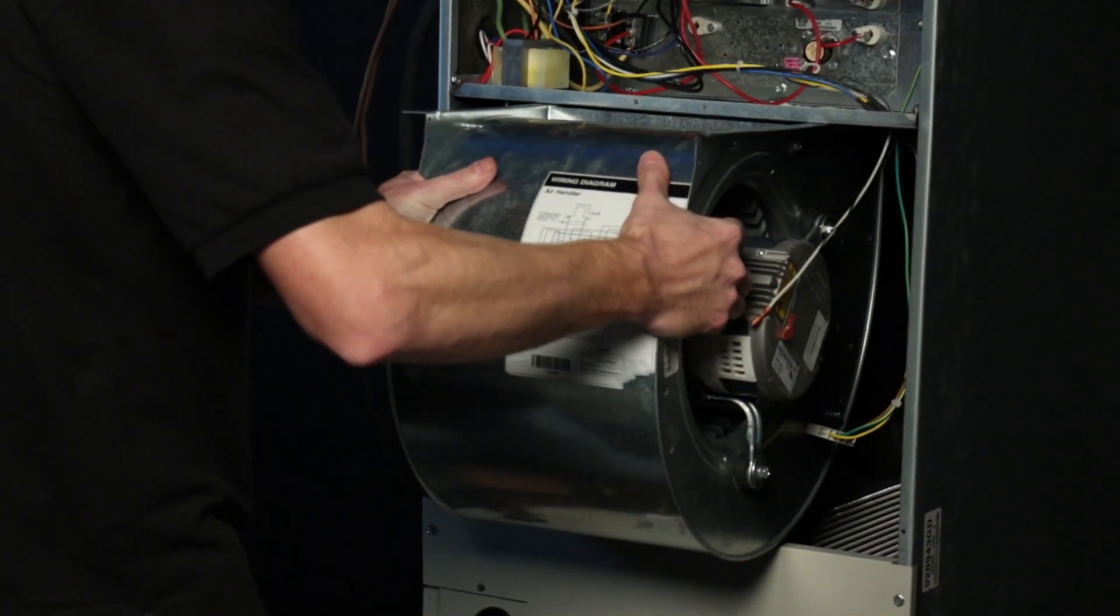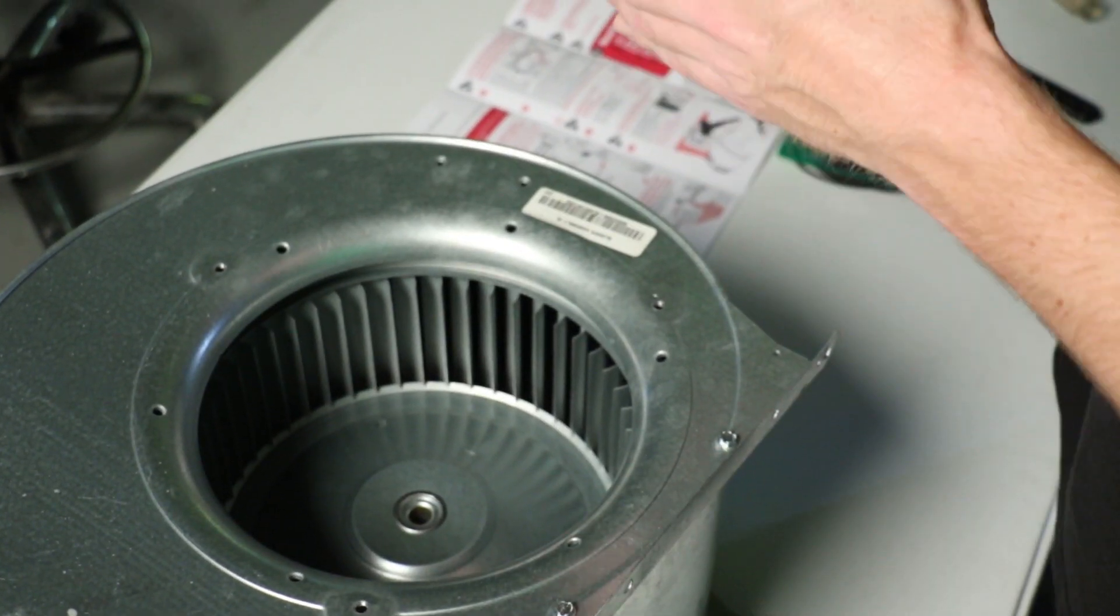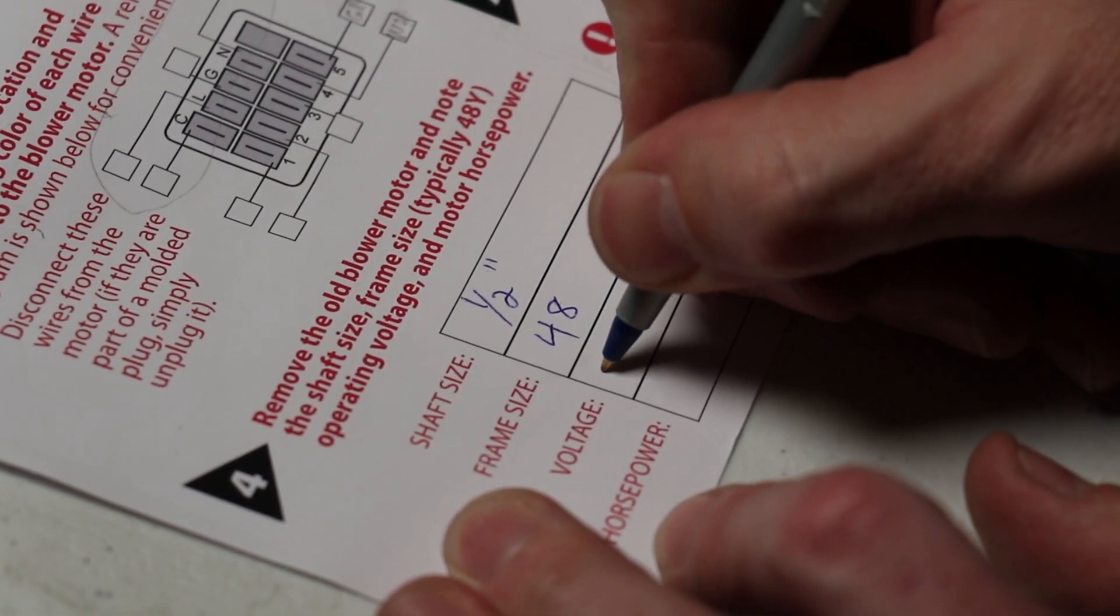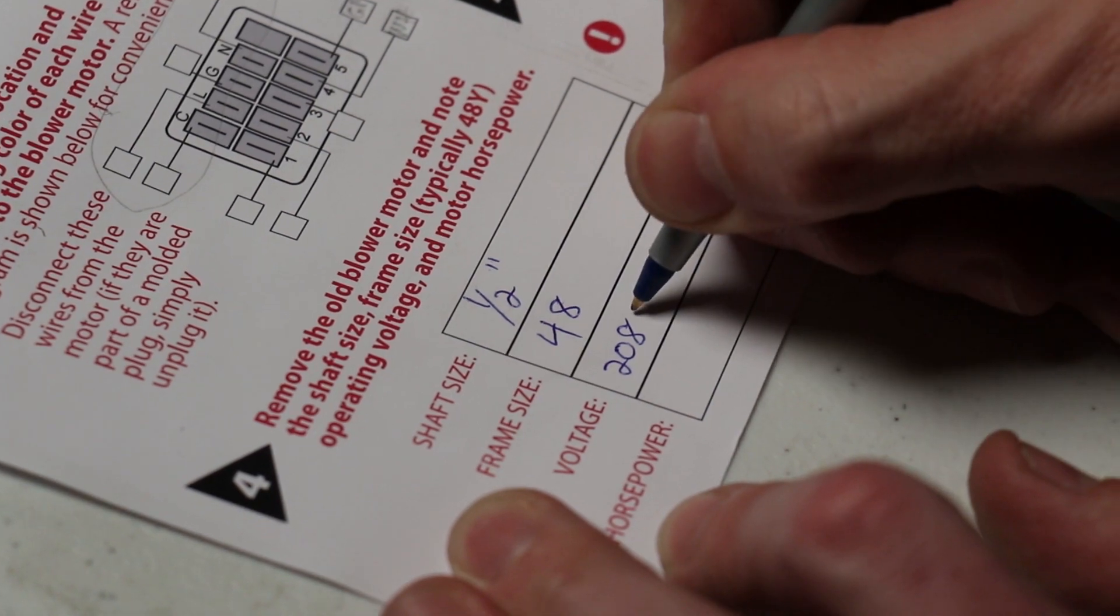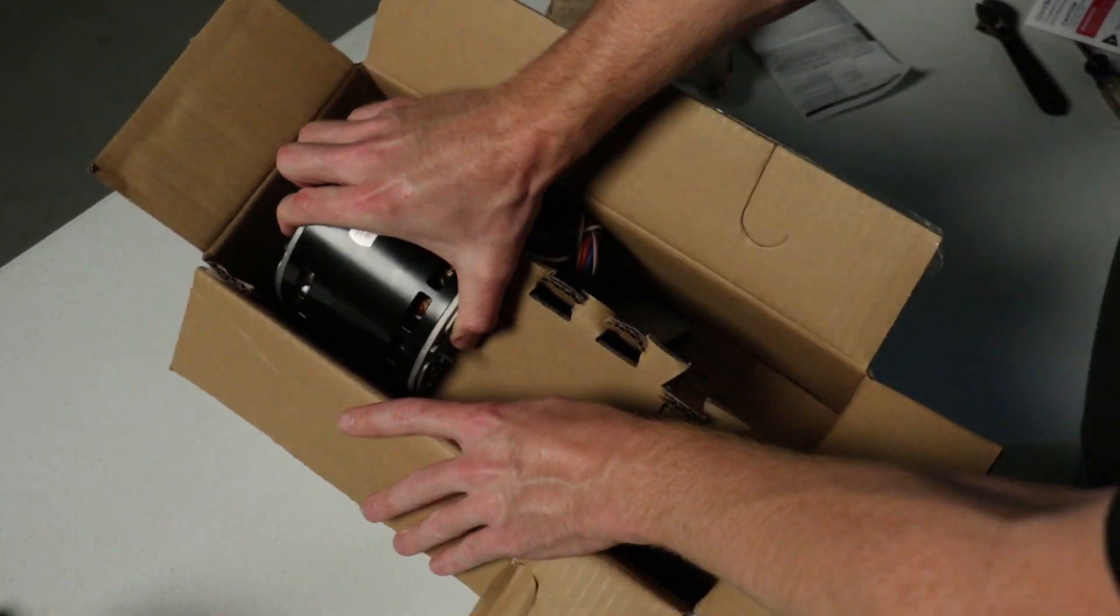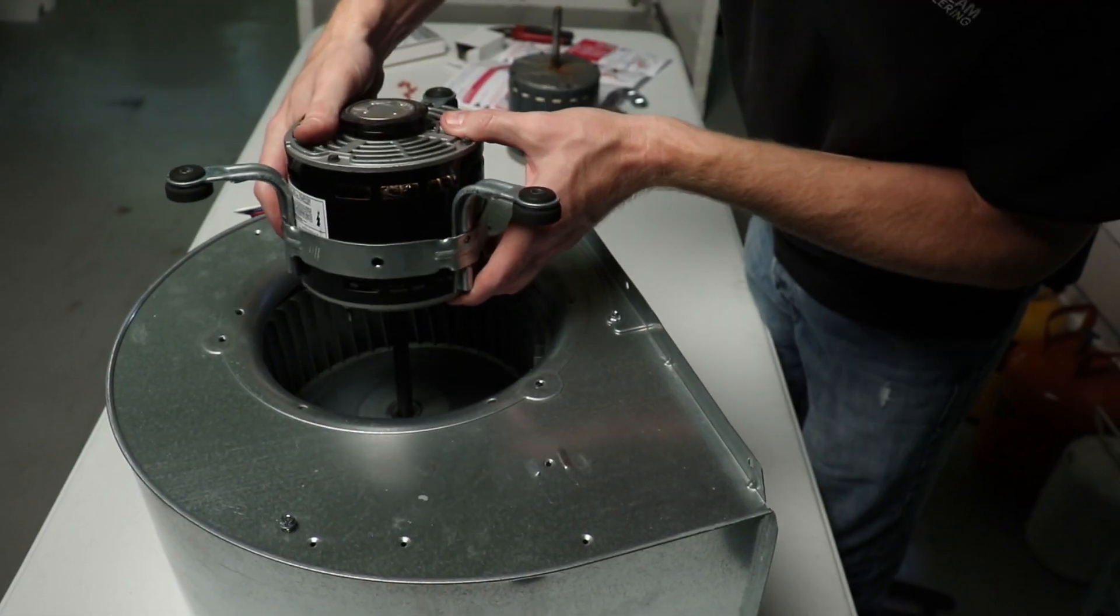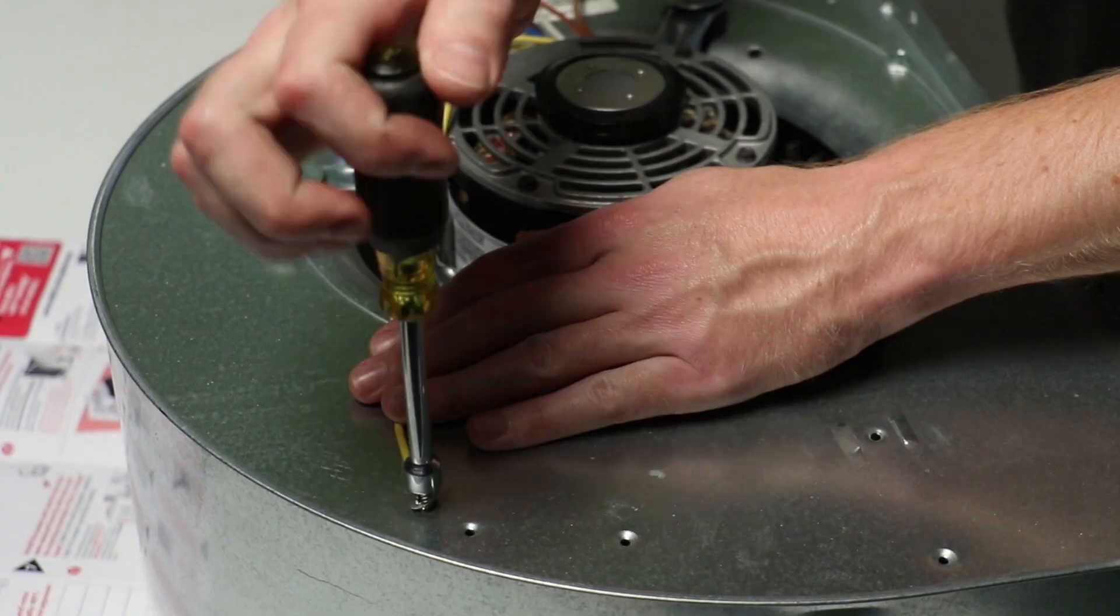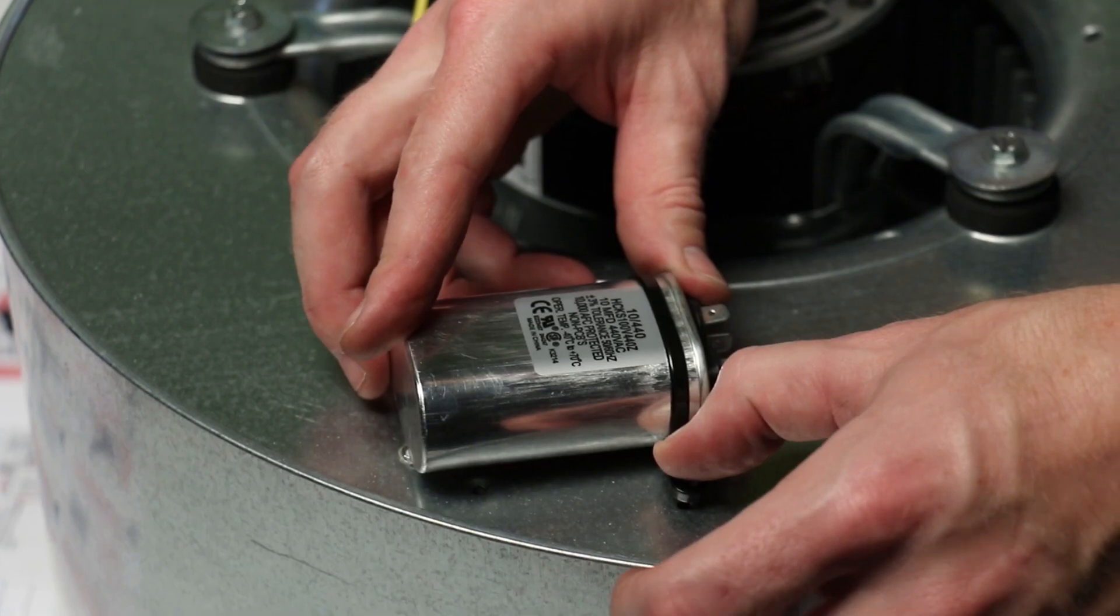Step four is to remove the old blower motor and take note of the shaft size, frame size, operating voltage, and motor horsepower. Write these values down in the instruction sheet. Step five: install a new permanent split capacitor blower motor with the specifications noted in step four. Properly ground the motor and mount the capacitor in a secure location.